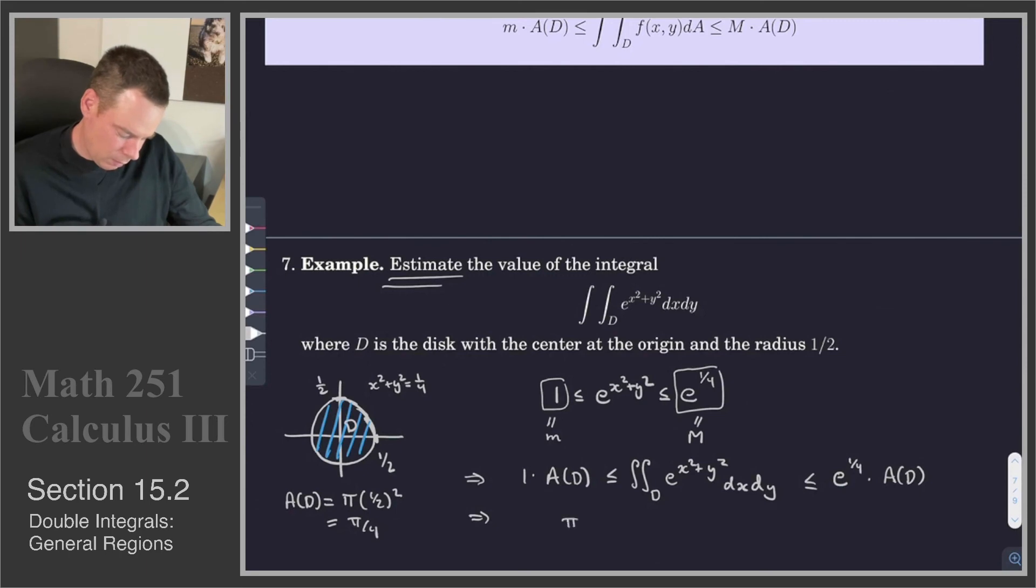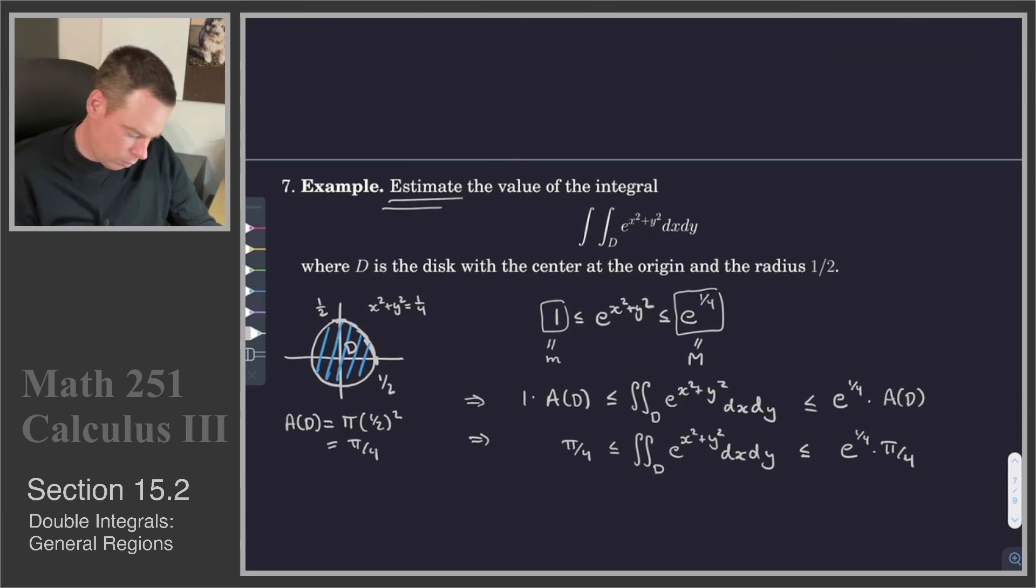So that means that our integral is trapped between pi by 4 and e to the one-quarter times pi by 4. And so these values are roughly, let's just get an approximate value for this, pi by 4 is roughly 0.785, and e to the one-quarter times pi by 4 is approximately 1.0085. So we've got an estimate for our integral. It's somewhere between 0.785 and 1.0085.